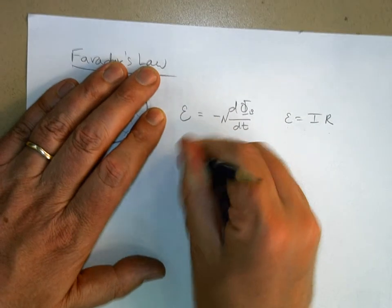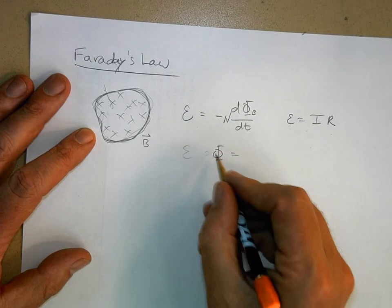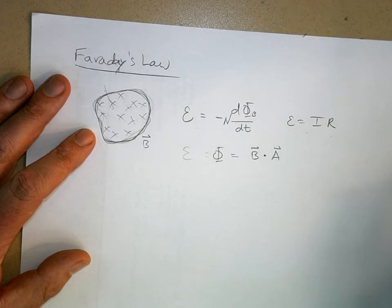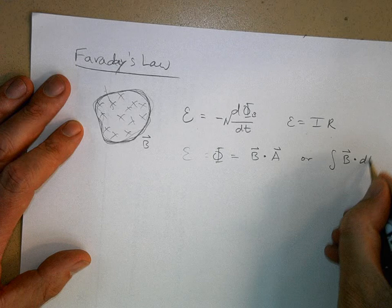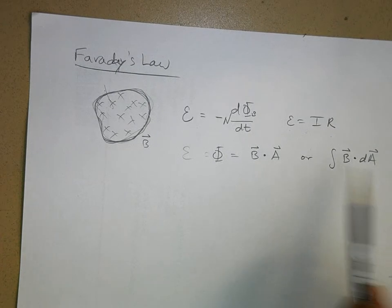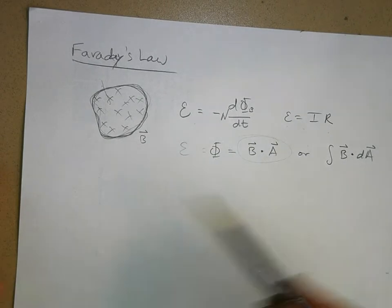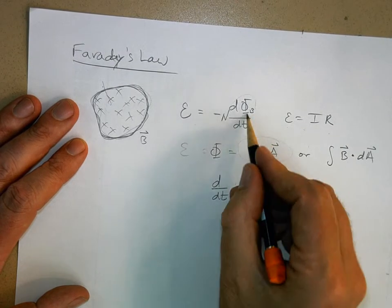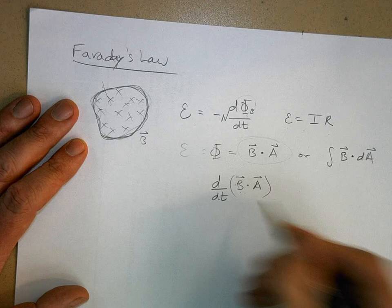Remember that magnetic flux in terms of magnetic field: the amount of magnetic flux is equal to the magnetic field dotted with the area, B dot A. If the area is not uniform or the field isn't uniform, you have to integrate it. Quite often B dot A is all you need. When you take the derivative of the magnetic flux, you're taking the derivative of B dot A, so you have to use the product rule.